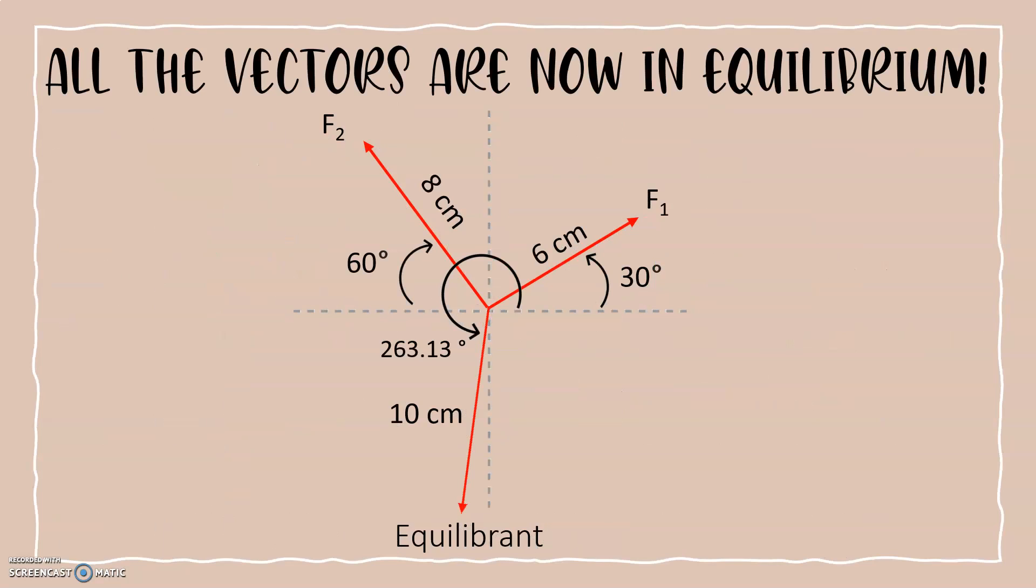So we finally have all of our vectors in perfect equilibrium. And our vectors in equilibrium are 6 centimeters at 30 degrees, 8 centimeters at 120 degrees, and 10 centimeters at 263.13 degrees.